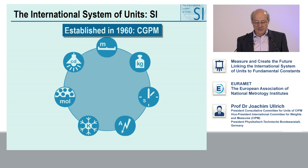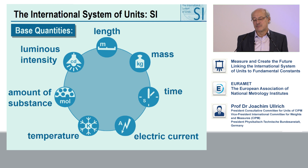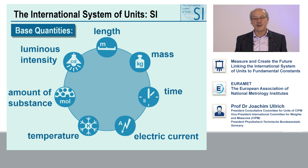The international system of units, the SI, was established basically in 1960 by the General Conference of the Meter Convention. It consists of the base quantities: length, mass, time, electric current, temperature, amount of substance, and luminous intensity, and the according units like the meter, the kilogram, the second, the ampere, and so on.